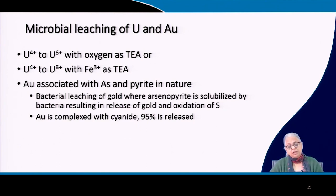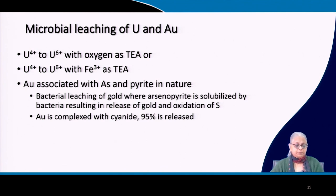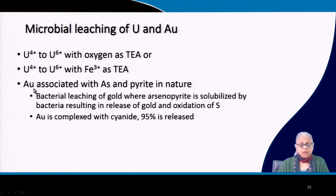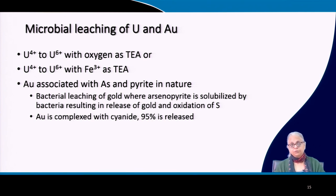Microbial leaching can also be done for uranium as well as gold. The concentrations of uranium and gold in ore form are very small, so huge amounts of ore have to be processed. Uranium U4+ to U6+ can be extracted with oxygen as a terminal electron acceptor using microbes, or with Fe3+ as the terminal electron acceptor. Gold in general is associated with arsenic and pyrite in nature, and bacterial leaching of gold where arsenopyrite is solubilized by bacteria will result in the release of gold and oxidation of sulfur. Gold is often complexed with cyanide, and you get 95% recovery of gold from the ore.